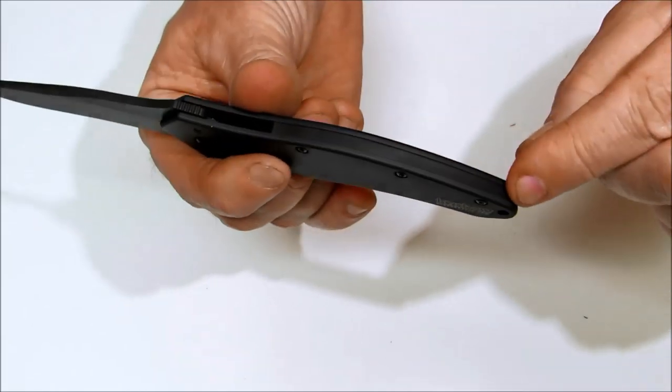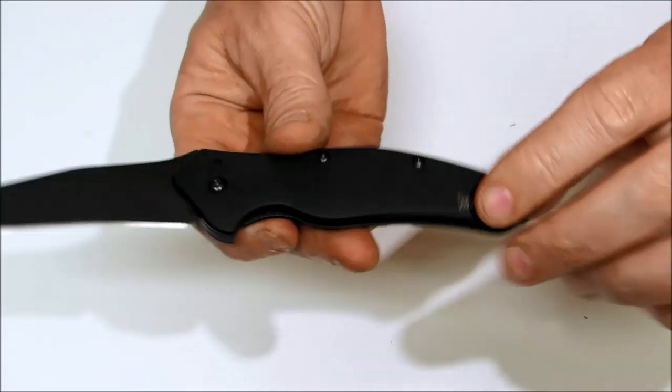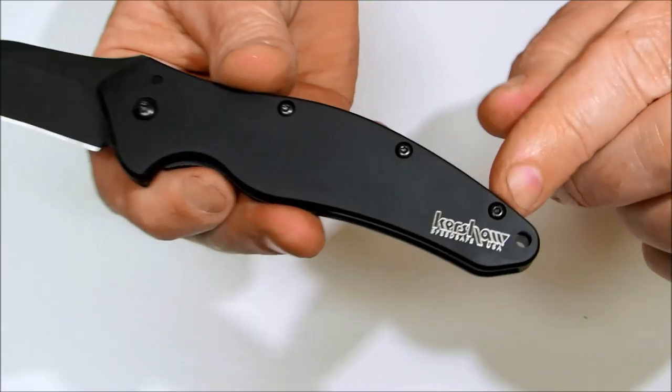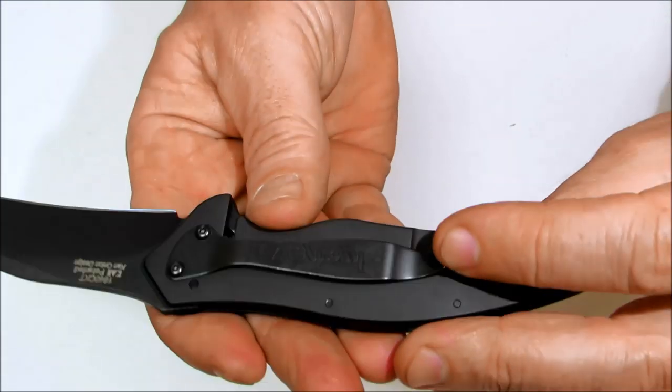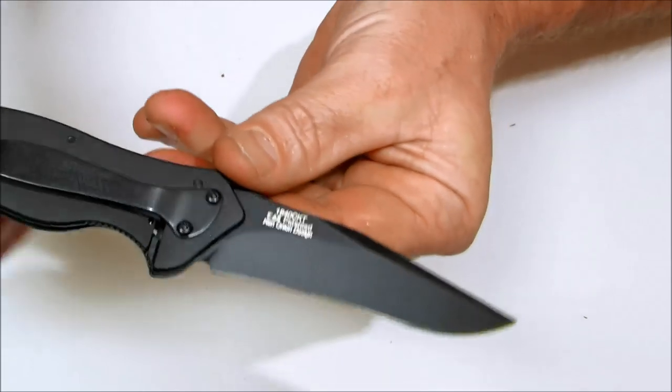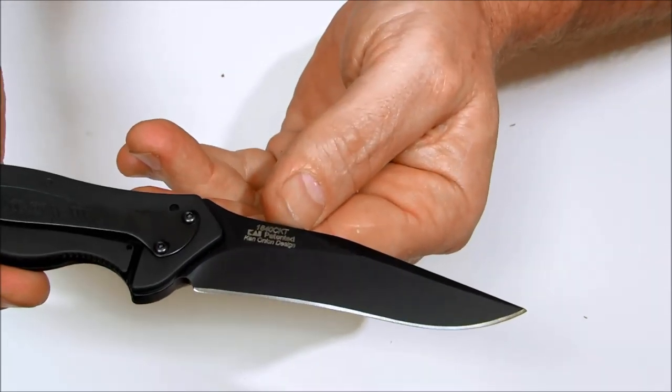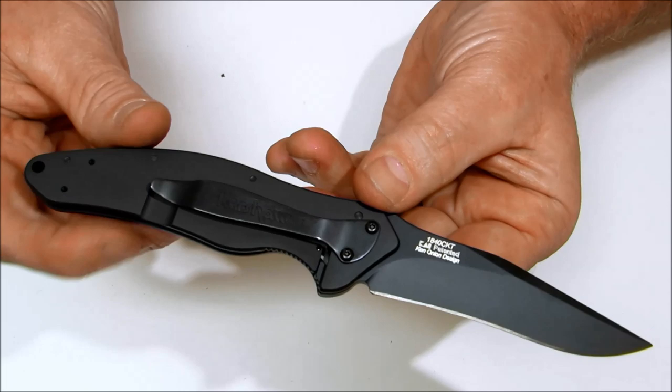It has a solid back spacer all the way down. All the hardware are Torx hardware. Here it says Kershaw. You also have the part number here and the Ken Onion design on the back end. These are made in the USA.